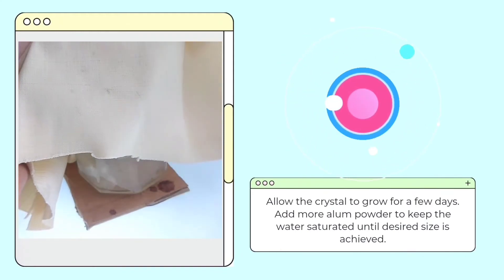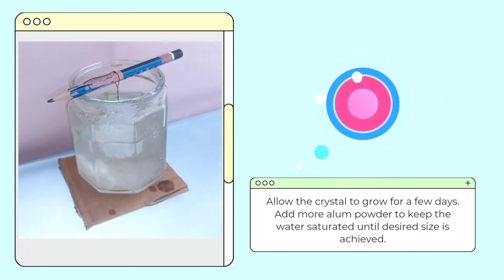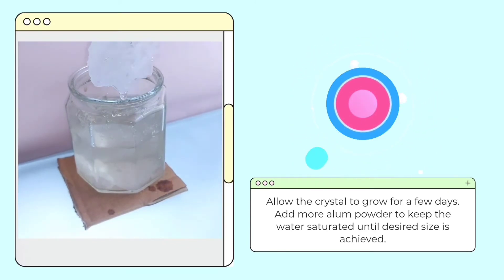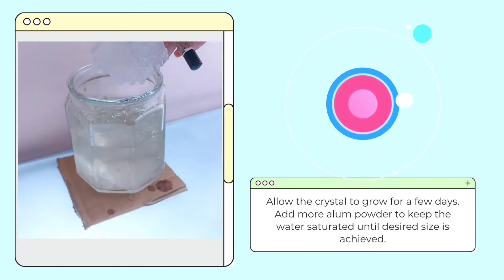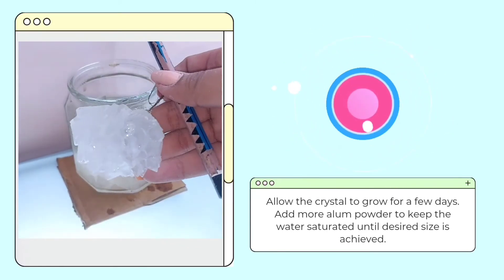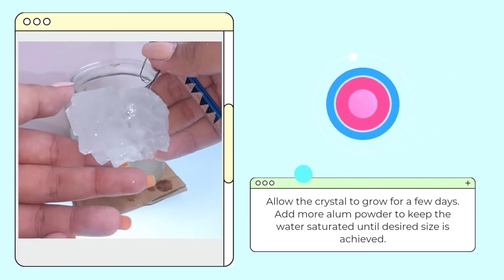Finally, allow the crystal to grow for a couple of days. There should be visible growth of the crystal. There's a possibility that the crystal will stop growing or will decrease in size. This is because the solution is no longer saturated.